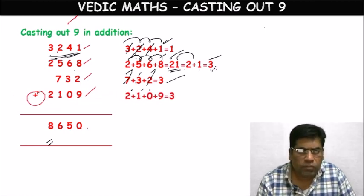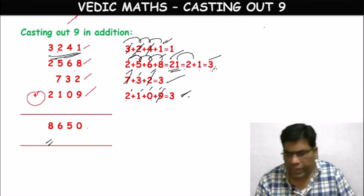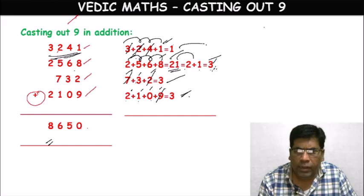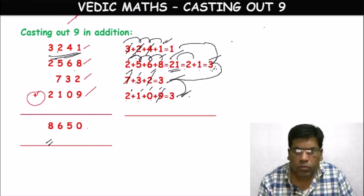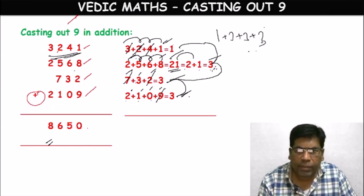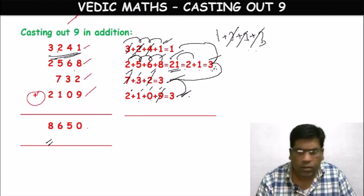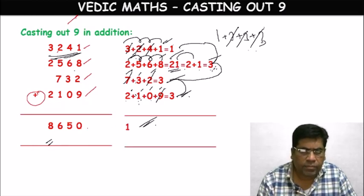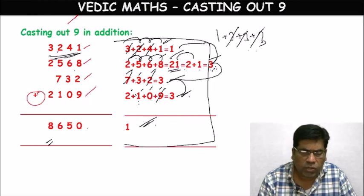For 2109: 2+1+0+9 — cast out the 9. Remaining: 2+1+0=3. Now the single digits are 1, 3, 3, 3. Is there a possibility of 9? 3+3+3=9 — cast it out. Remaining: 1. So in this process, we got 1.